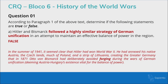Letter A: 'Hitler and Bismarck followed a highly similar strategy of German unification in an attempt to maintain an effective balance of power.' This is false. The text clearly states that Otto von Bismarck had deliberately avoided forging alliances during the wars of German unification. Since Bismarck avoided what Hitler did, they cannot be described as highly similar. It's very clear that Hitler did one thing and Bismarck did another.